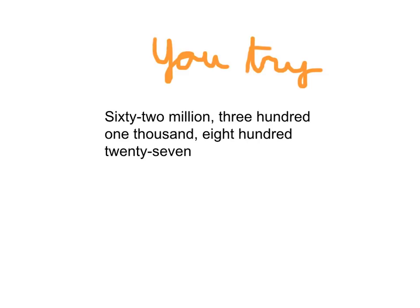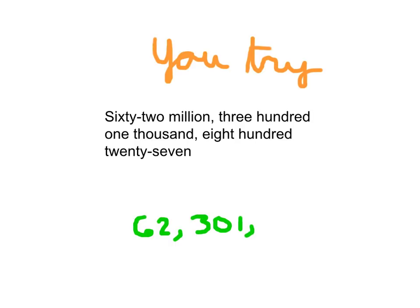Here's another one for you to try: write this number in standard form. Remember, there should be 3 digits in each period. The only period without 3 digits will be the first one, because it says 62 million — there's no 100,000,000 digit. In the millions period, write 6 and 2. Then 301,000 gives us 301. Finally, 827 gives us 8, 2, 7. The number is 62,301,827, which matches the word form shown.